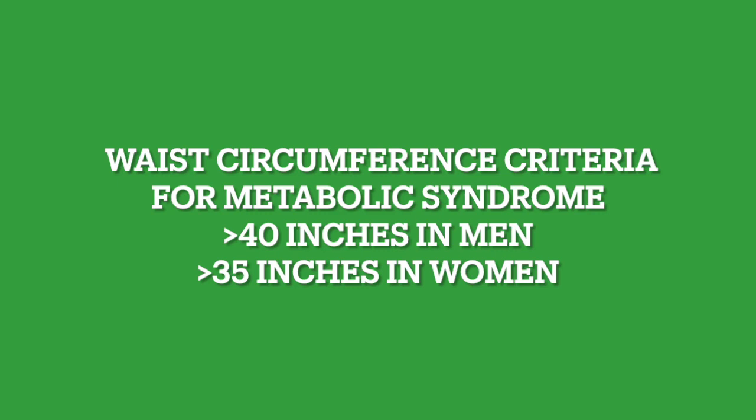The criteria for metabolic waist circumference is more than 40 inches in men — that's 102 centimeters — and more than 35 inches in women, which is 88 centimeters. This is based on United States standards; it actually varies by a few inches in different countries. Waist circumference also correlates with central adiposity, which is the level of fat inside your body.